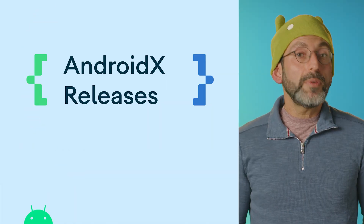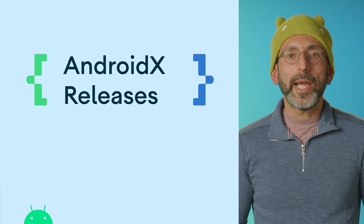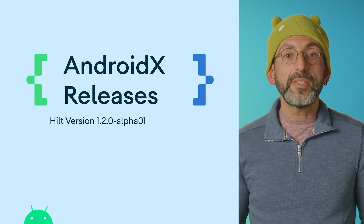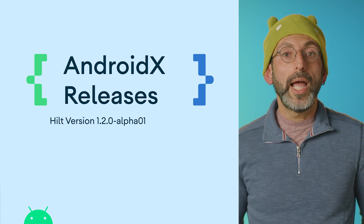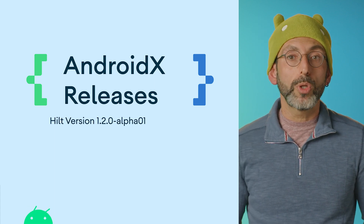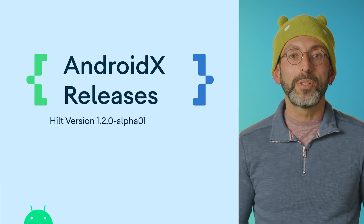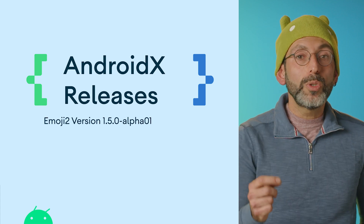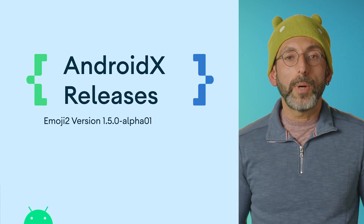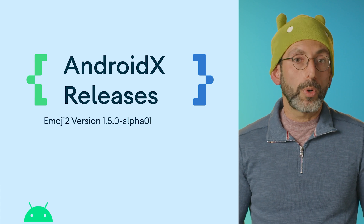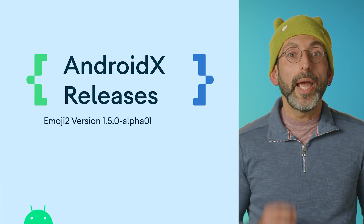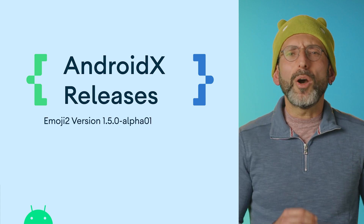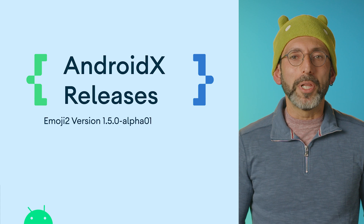We had several new alpha libraries launched in Android Jetpack. Hilt version 1.2.0-alpha01 adds overloaded HiltViewModel and HiltNavGraphViewModels functions for assisted injection support. Emoji2 version 1.5.0-alpha01 contains an updated emoji font to support Emoji 15.1 and also introduces some API changes. You can see all the AndroidX release notes in the description below.